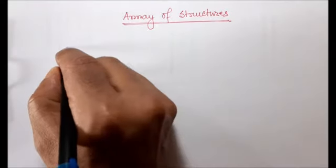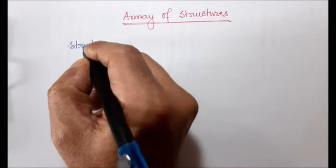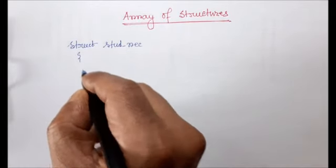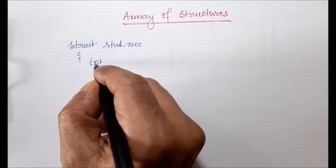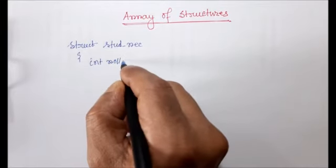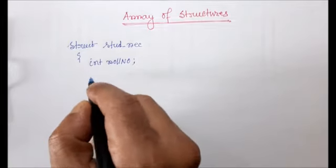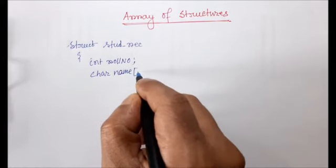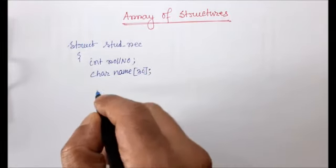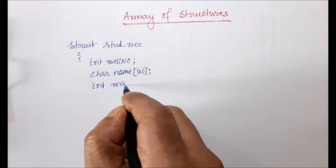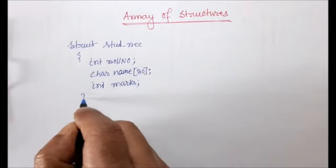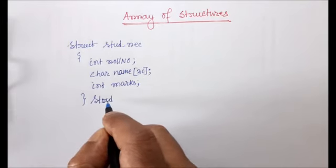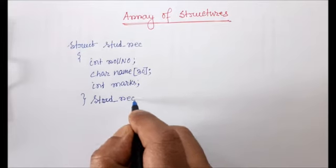For example, we have a struct keyword and the name of the structure is student — student record. Within it, we have three fields: one is integer roll number, then char name with a size of 30, and integer marks. Then we write student_record with an array of size 30.